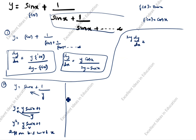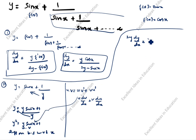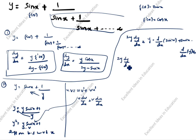Applying the product rule (u·dv/dx + v·du/dx) to y·sin x: we get y·cos x + sin x·dy/dx, and the differentiation of 1 is 0. So 2y·dy/dx = y·cos x + sin x·dy/dx.